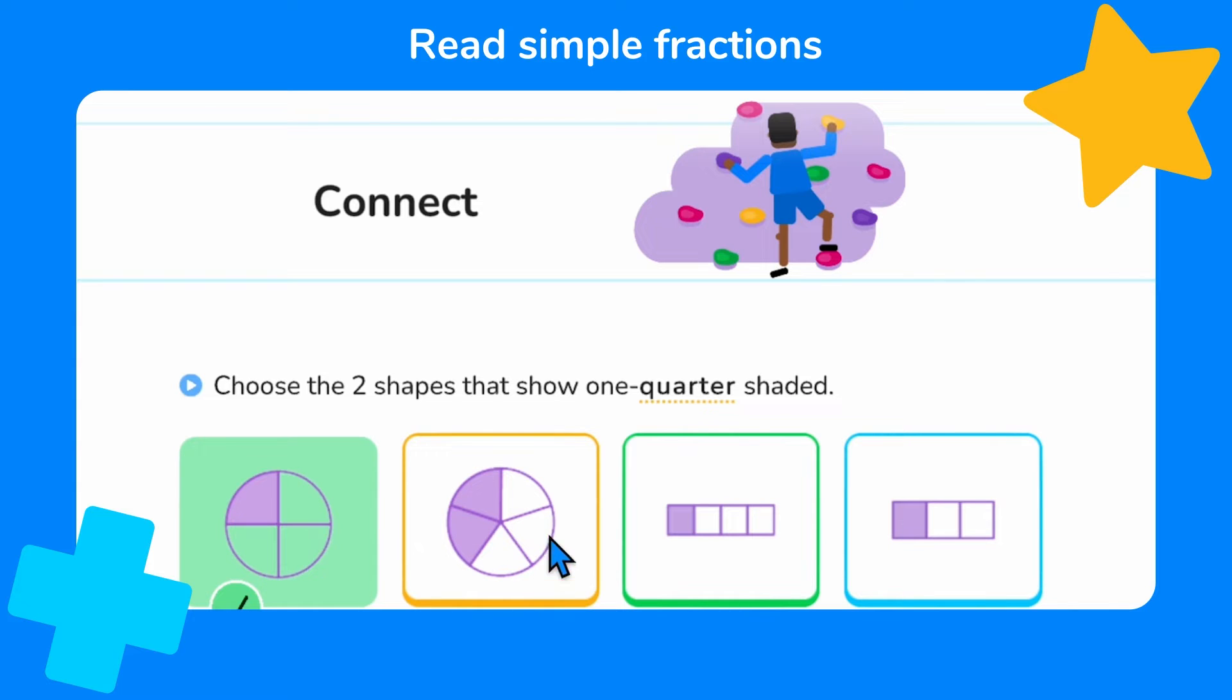This circle has been split into five equal parts with two parts shaded, so we know that it does not show one quarter. This bar has been split into four equal parts with one part shaded, so we know that this must also show one quarter.